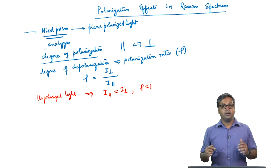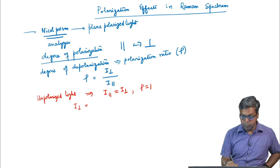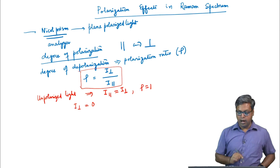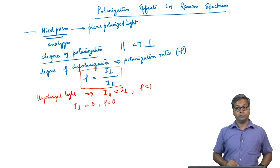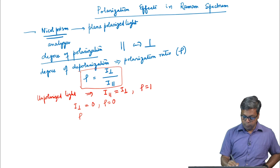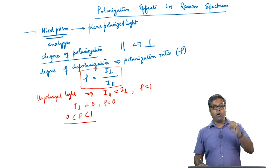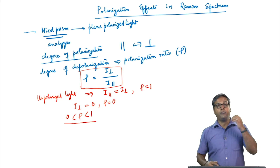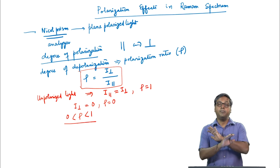If the scattered light retains its initial polarization then I perpendicular will be 0, so rho, which is given by I perpendicular divided by I parallel, will also be 0. For intermediate degrees of polarization, rho will lie between 0 and 1. The relevance of this to Raman spectroscopy is that lines in some Raman spectra are found to be polarized to different extents even if the exciting radiation is completely unpolarized.